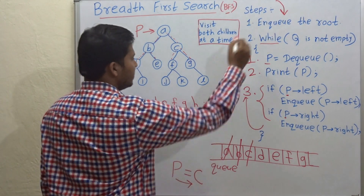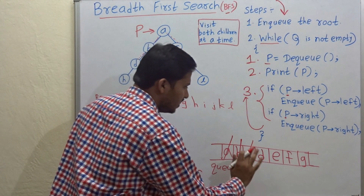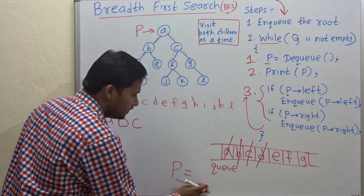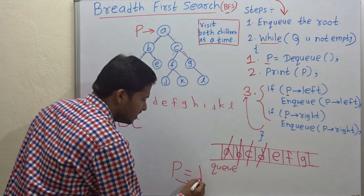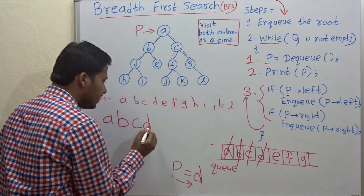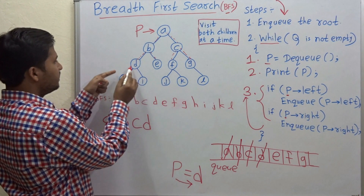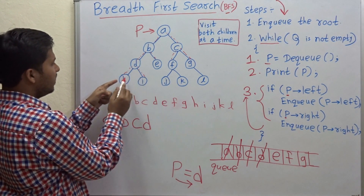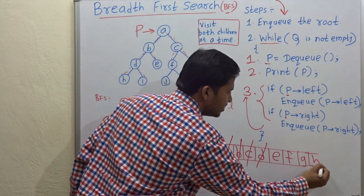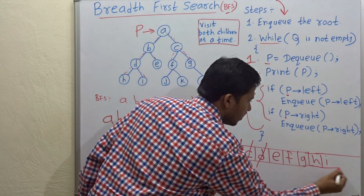Next iteration: the first step is to dequeue. The dequeued element is D, so P is pointing to D. Print D. Enqueue both children of D: the left child is H and the right child is I, so enqueue H and I.